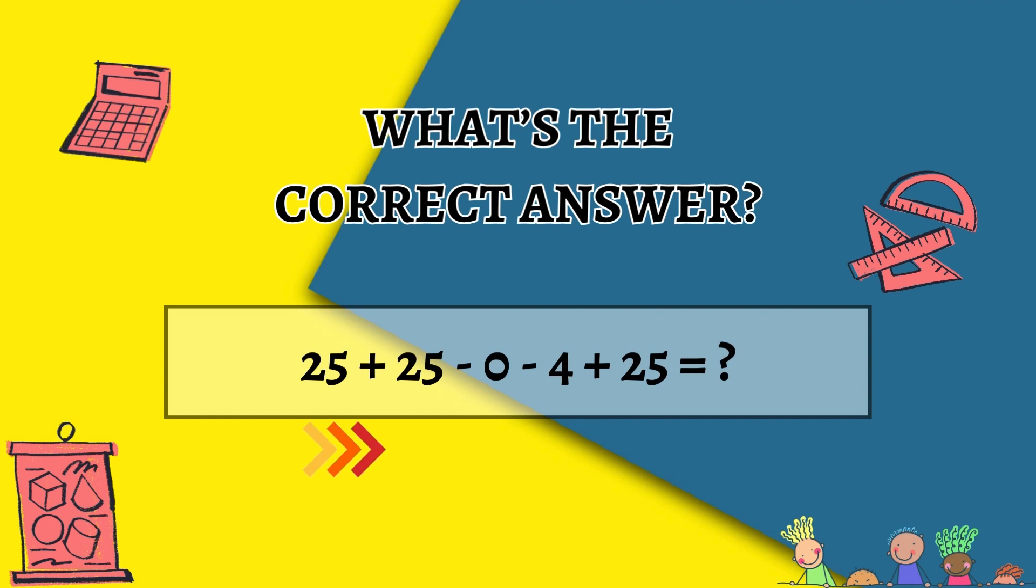25 plus 25 is 50, minus 0 is still 50, minus 4 is 46, and then plus 25 is 71. Voila, 71 is the correct answer.